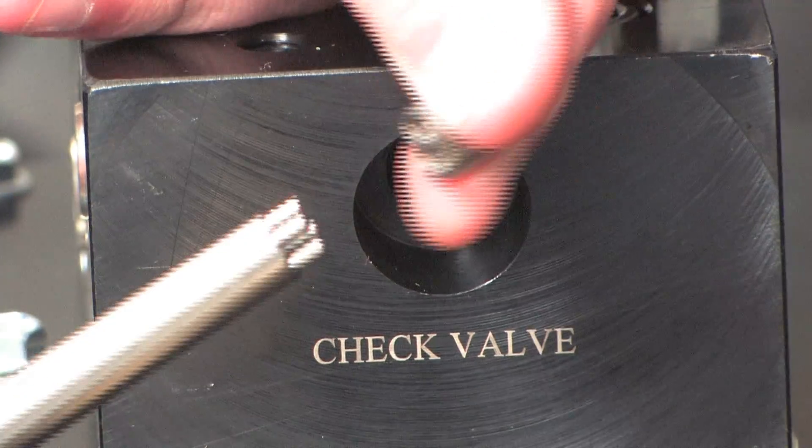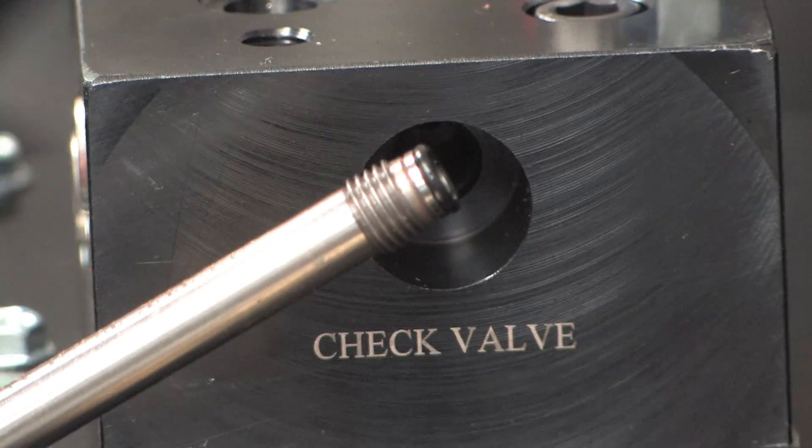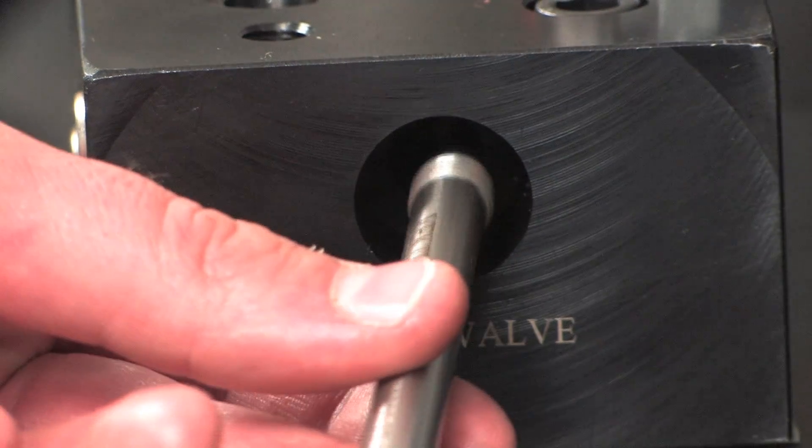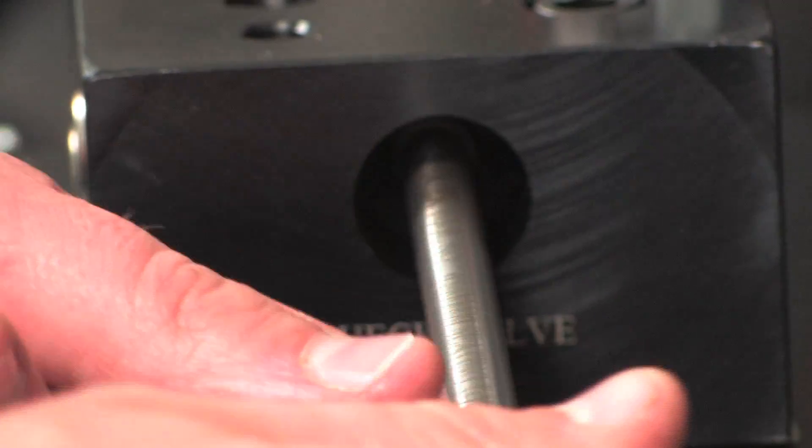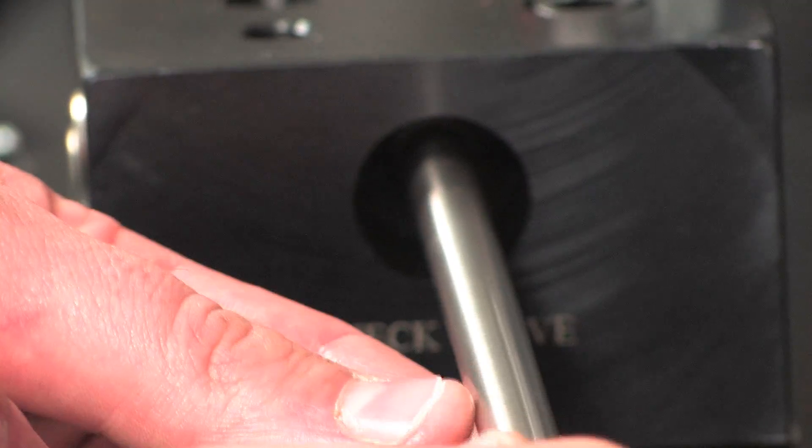Install the new check valve on the tool and insert it into the port. Make sure the O-ring is already installed on the check valve. Tighten by hand until the check valve reaches the bottom of the port.